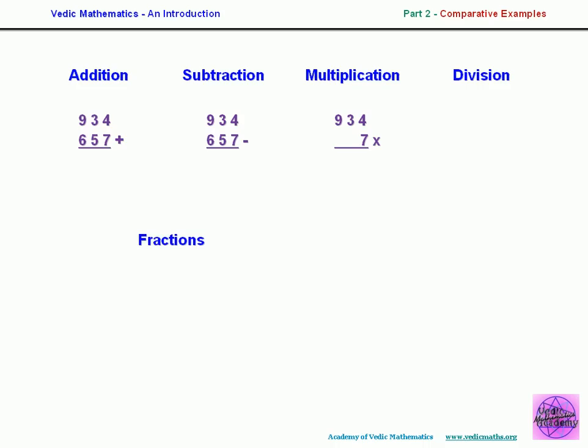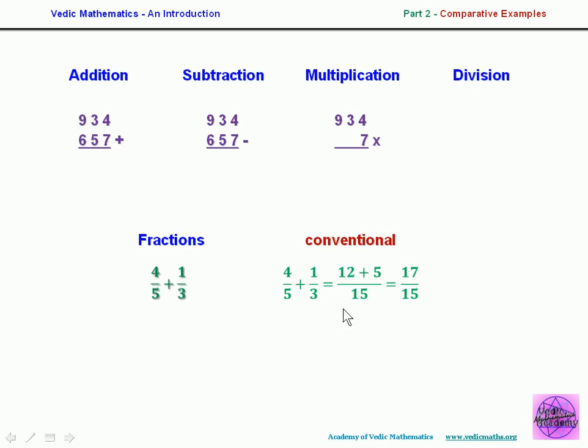Fractions are a notoriously difficult subject for children. In the Vedic system, we use a simple pattern — the vertically and crosswise formula — and write the answer straight down. You don't have to worry about common denominators. It's easy to explain, extendable to three or more fractions, and works even when denominators are not relatively prime. The same pattern applies to algebraic additions and subtractions, and the four operations on fractions become much more unified rather than four almost completely different methods. The conventional method, by contrast, requires finding a common denominator and several steps of calculation.